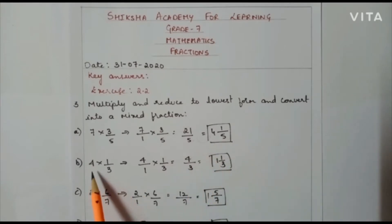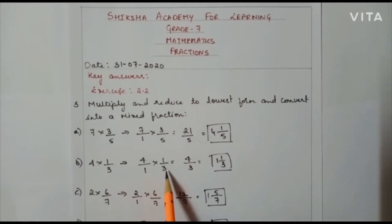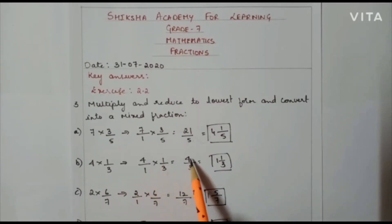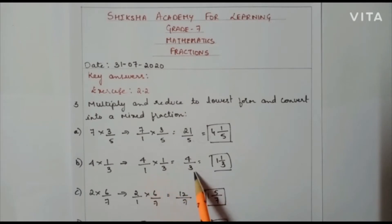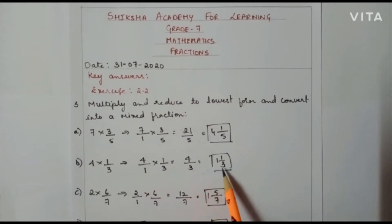Next problem: 4 × 1/3, that is 4/1 × 1/3. Here I also can't cancel. So 4 × 1 = 4, and 1 × 3 = 3. So 4/3 is the answer. When I convert this to a mixed fraction I will get 1 and 1/3.